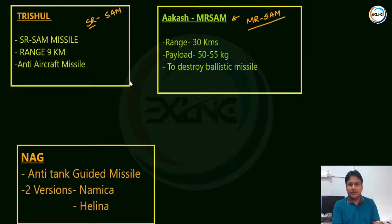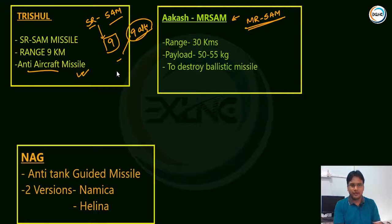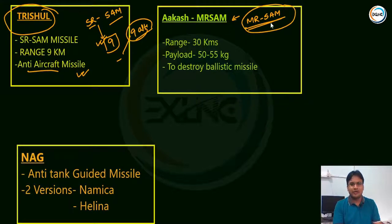Coming to surface-to-air missiles, there are two categories: short range surface-to-air (Sr. SAM) and medium range surface-to-air (Mr. SAM). Short range has a 9 km altitude range. It can destroy aircraft using anti-aircraft missiles. This system is called the Trishul system, with a range of 9 km altitude. Mr. SAM, which has a longer range, can cover up to 30 km height.